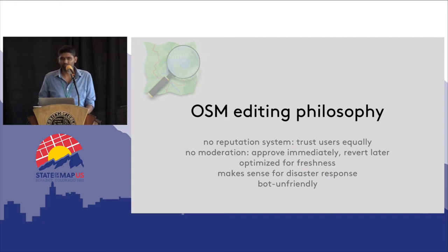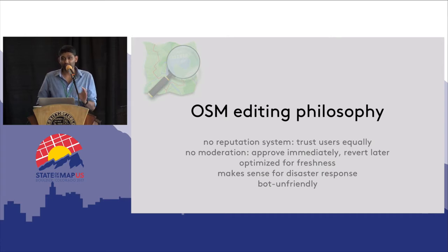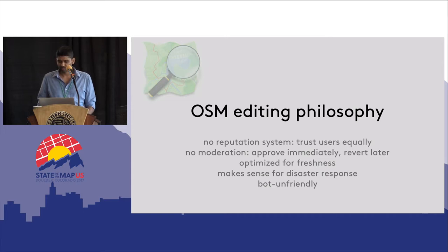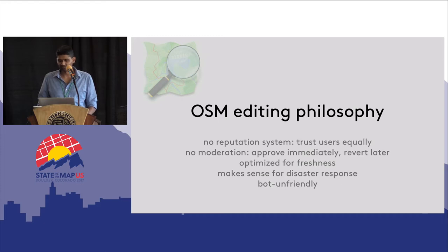This gets to probably the core of the discussion. In comparing these two datasets and communities, it really comes down to fundamentally different editing philosophies. OSM has no reputation system — all users are trusted equally regardless of experience or track record, and there is no moderation; edits for the most part are immediately approved, and the community as a whole is relied upon to revert bad edits. This is an approach optimized for freshness, and it entirely makes sense for mapping, for fast response to disasters, or to map areas where there aren't many contributors. It's similar to Wikipedia, except Wikipedia has embraced bots detecting and reverting vandalism, whereas OSM on the whole still seems pretty conservative as far as automated edits go — and that's probably an understatement.